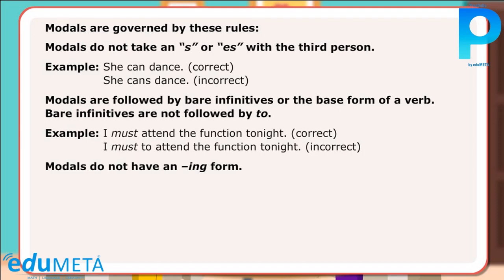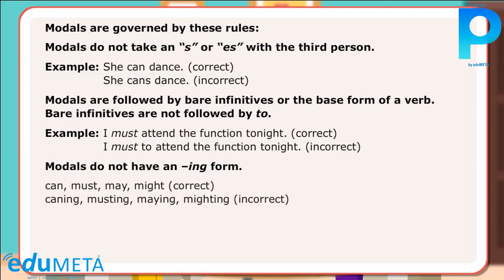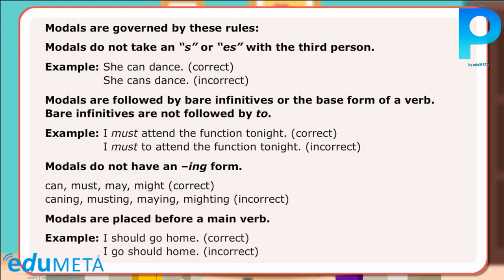Third, modals do not have an ING form. Can, must, may, might — correct. Canning, musting, maying, mighting — incorrect. Fourth, modals are placed before a main verb. Example: 'I should go home' — correct. 'I go should home' — incorrect. Let us look at a few more sentences.